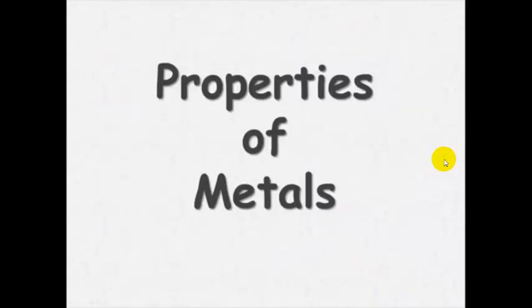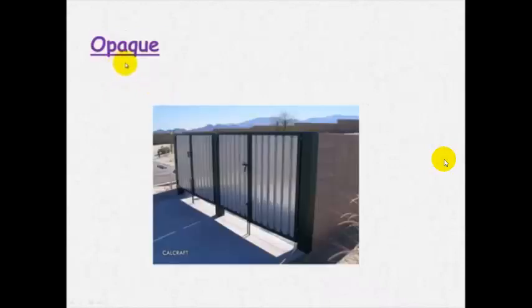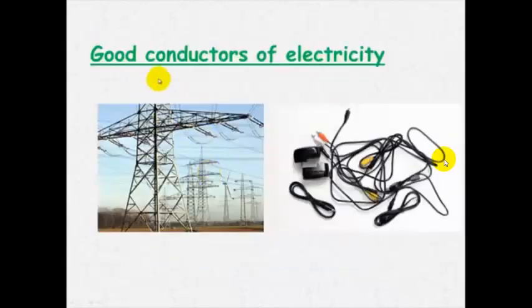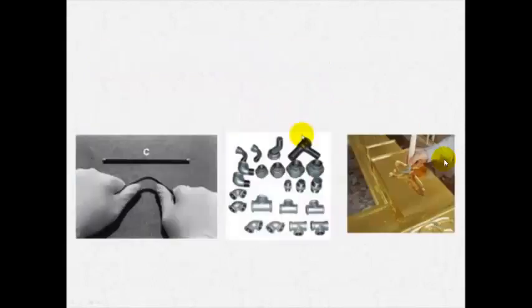Properties of metals. Metals are lustrous. You can see here that it's nice and shiny and lustrous means that it reflects light. They are opaque which means light can't pass through. They are good conductors of electricity and they are good conductors of heat and that's why we use them for cooking.